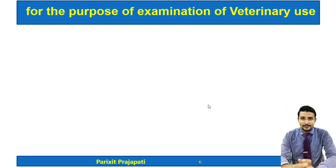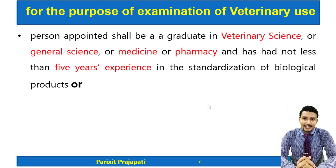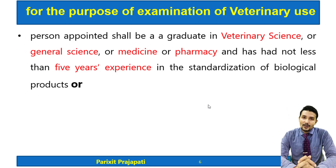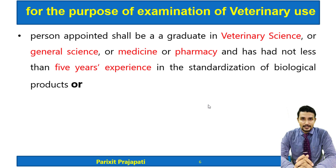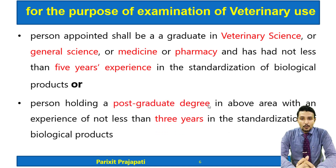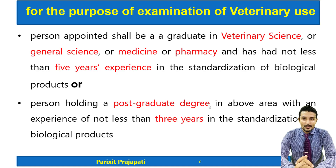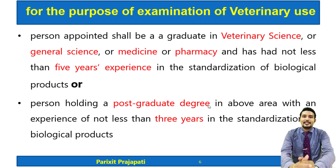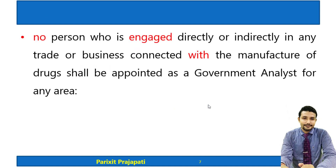For examination of drugs for veterinary use, a person appointed as Government Analyst should be a graduate in veterinary science, general science, medicine, or pharmacy with at least five years experience in standardization of biological products, which are Schedule C drugs. Alternatively, a postgraduate degree in veterinary science, general science, medicine, or pharmacy with at least three years experience in standardization of biological products is required.